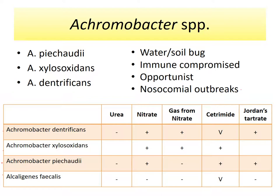These organisms are oxidase-positive, motile, and gram-negative rods. Xylosoxidans, for example, oxidizes xylose as well as glucose. One of the things that helps differentiate Achromobacter from each other is Jordan's tartrate media, which tests the ability of the organism to utilize tartrate as an organic acid. Denitrificans and piechaudii can utilize tartrate, while Alcaligenes faecalis cannot. So Jordan's tartrate and nitrate are going to differentiate Achromobacter from Alcaligenes. There's less information about xylosoxidans because the sugars help identify it right away.